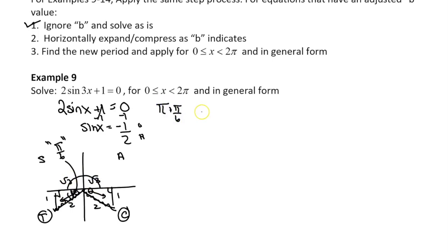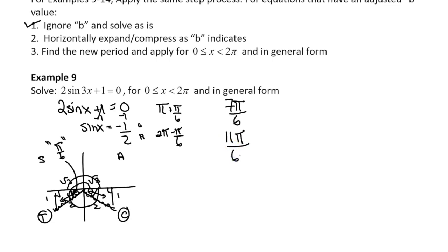To find what those two terminal arms would be: for the first solution, we go over an entire π plus π over 6, giving us 7π over 6. For the second solution, we go over the full 2π and subtract π over 6, leaving us with 11π over 6. I'm going to write these on top of each other because we're going to expand on both. Just remember we solved for sine x equals negative 1 half.